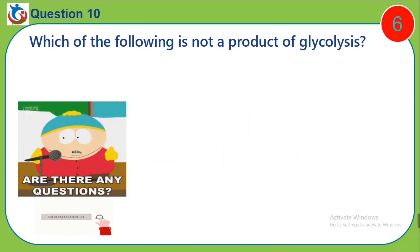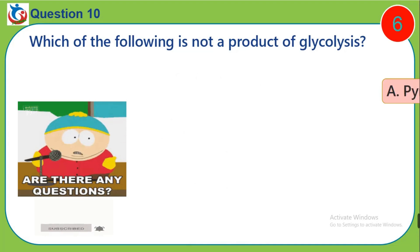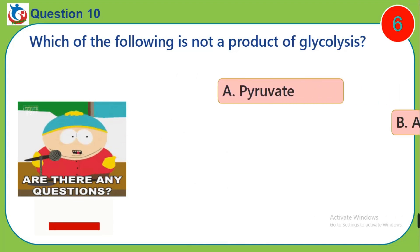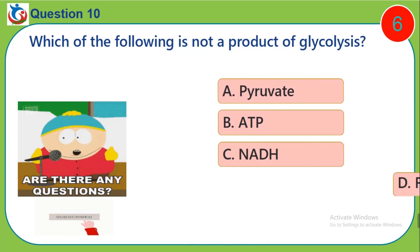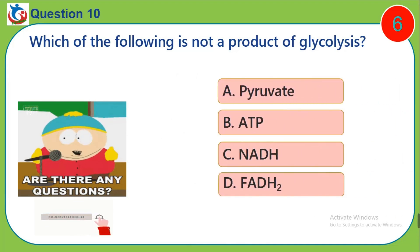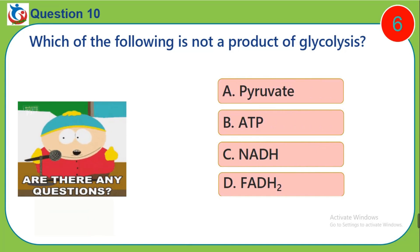Question 10. Which of the following is not a product of glycolysis? A. Pyruvate. B. ATP. C. NADH. D. FADH2.